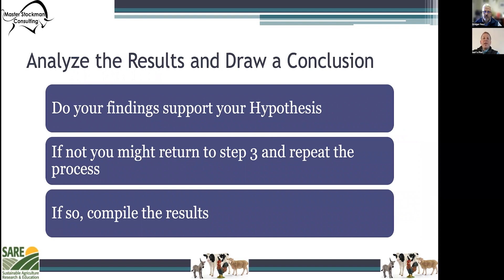In step six, we're going to analyze the results and draw a conclusion. Often our predictions were not accurate and a hypothesis is not supported. In such cases, you can go back and construct a new hypothesis and prediction based on the information you learned during this experiment. This starts much of the process of the scientific method over again. For instance, if you did an experiment that did not support your hypothesis, you might return to step three and then repeat the process again.